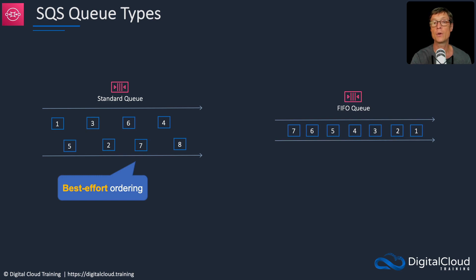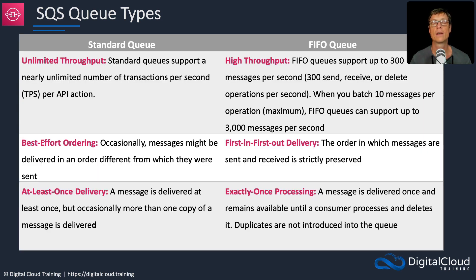Or you need to use a different type of queue called a FIFO queue. FIFO stands for first in, first out, meaning you get first in first out delivery — the first message placed in the queue is going to be processed first. In the standard queue it will try to do that, but it's not guaranteed. A standard queue supports a nearly unlimited number of transactions per second for each API action. With FIFO queues, you can batch 10 messages per operation, and the FIFO queue can support up to 3000 messages per second. With FIFO, the order is strictly preserved.